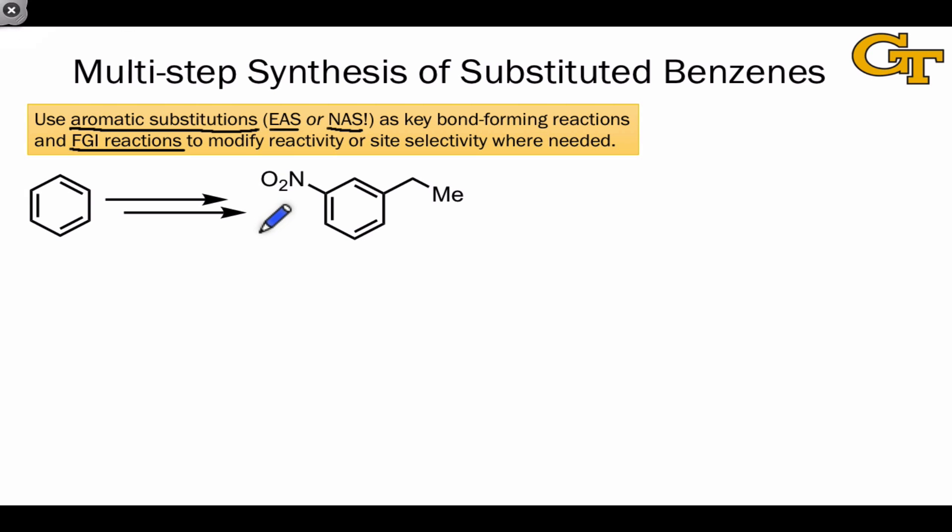This could actually be done through a couple of different approaches. We can notice, for example, that the nitro group is a meta director and we have the alkyl substituent at the meta position. And so one idea involves first nitrating the benzene, and then using Friedel-Crafts conditions to alkylate this nitrobenzene intermediate.